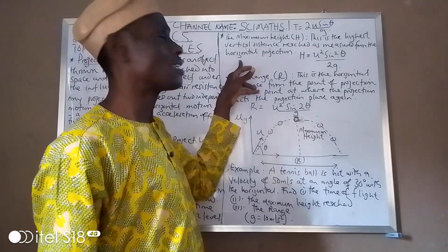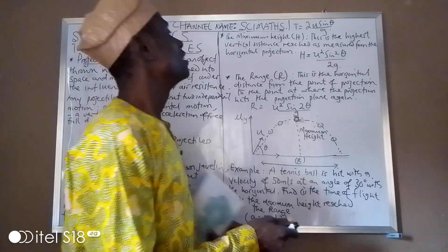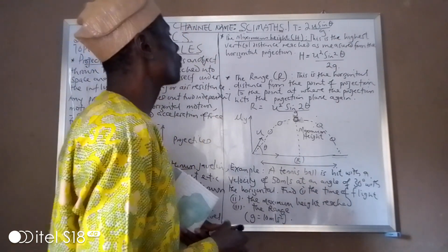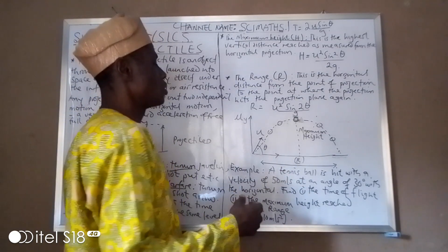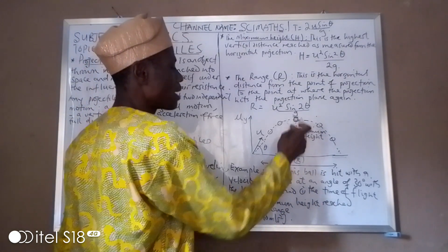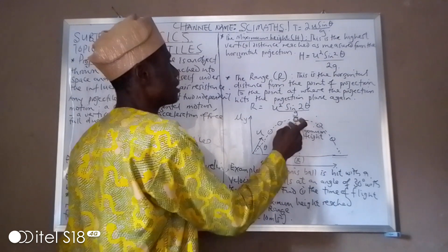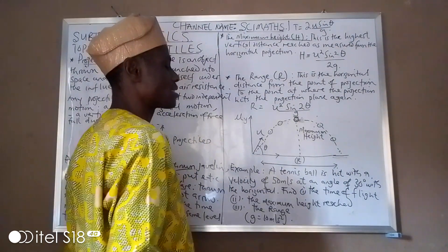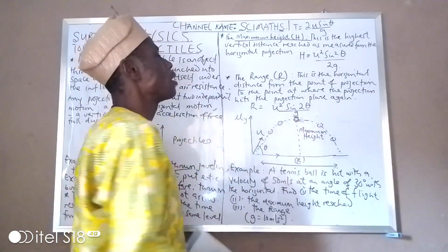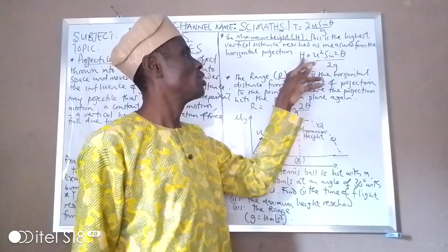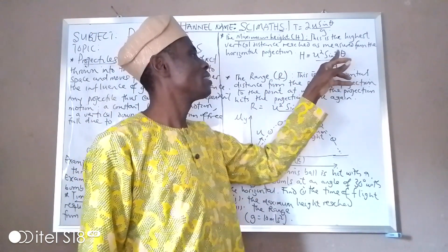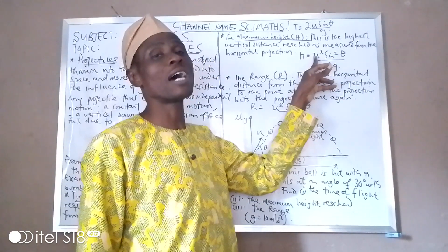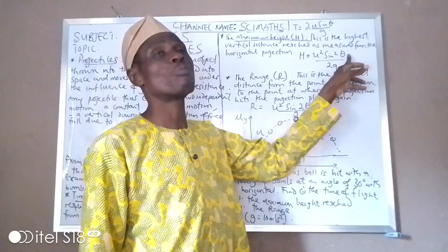The second concept: maximum height H. This is the highest vertical distance reached as measured from the horizontal projection plane. The formula for calculating the maximum height is: H equals u² sin²θ over 2g, where u is the initial velocity and θ is the angle of projection.